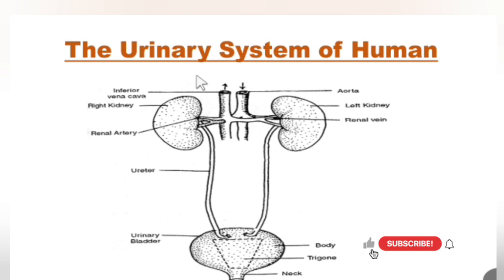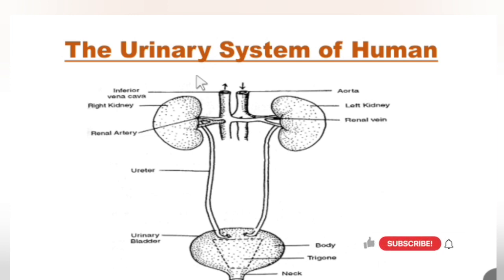These nitrogenous waste products are the major toxins produced by our body, such as urea, uric acid, and creatinine. There are also certain minerals and other compounds present in excess that the body does not need. Together, they make up urine, which is synthesized with the help of the urinary system.